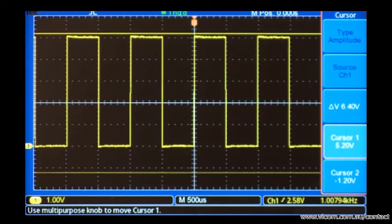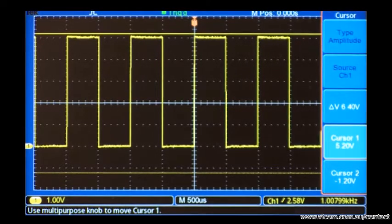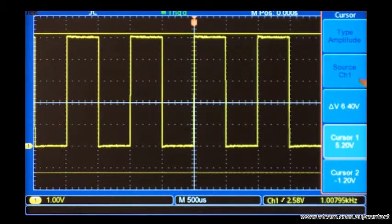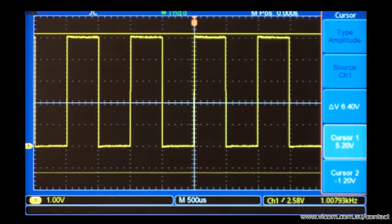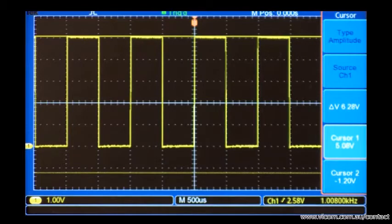This brings up two horizontal cursors. Since the signal is connected to channel 1, I need to make sure that it's the source for the cursor measurement. We'll use both cursors to make the peak-to-peak measurement. I'll set the first one to the highest point of the waveform.